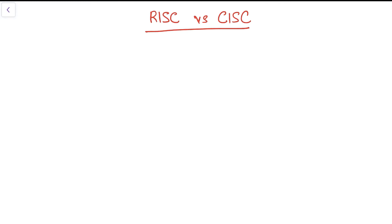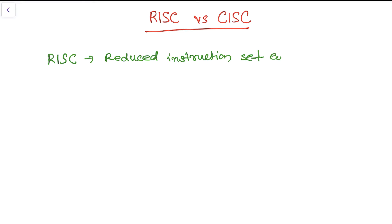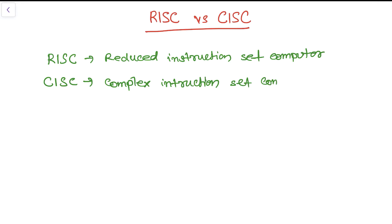Hi, welcome back to the new lesson. This is Lachmik Kantiwari. In this lesson I am going to show you what is the difference between RISC and the CISC architecture. RISC architecture stands for Reduced Instruction Set Computer, whereas CISC stands for Complex Instruction Set Computer. As this name depicts, in RISC architecture there is a less number of instructions.